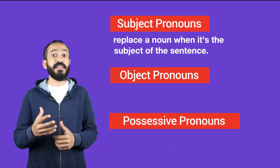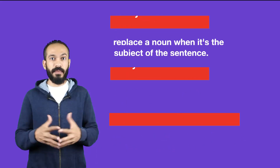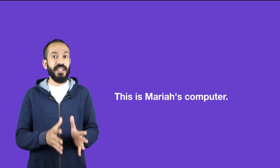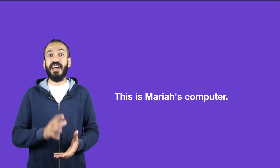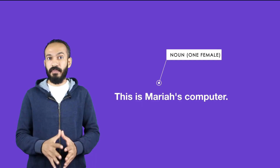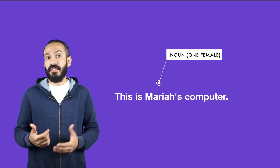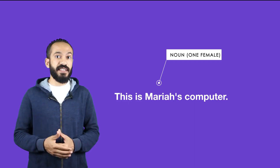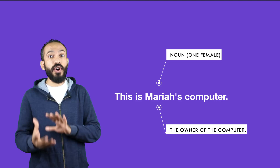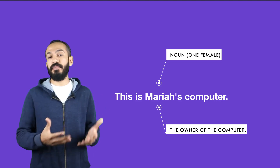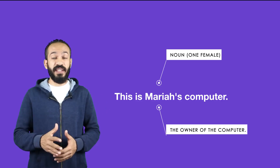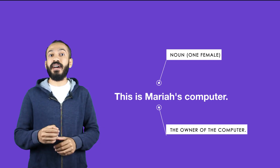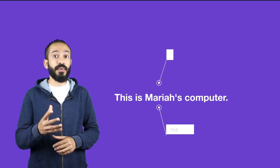Remember, the word possess means to own something. Watch that sentence: This is Maria's computer. The word Maria here is a noun that names one female. Maria is not the subject of the sentence and it's not the object of the sentence. It is simply the person that owns the computer. That's why if you want to replace the word Maria, you would replace it with a possessive pronoun or adjective.